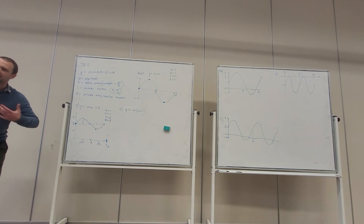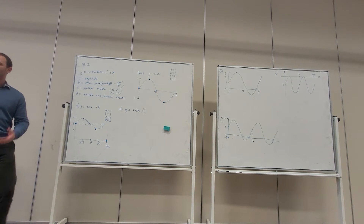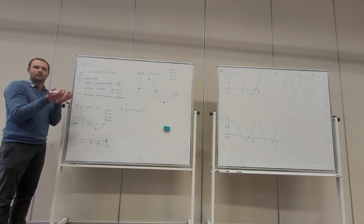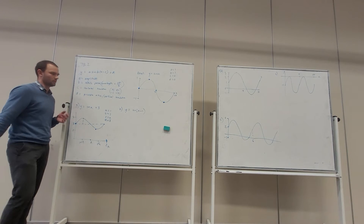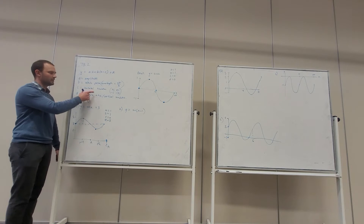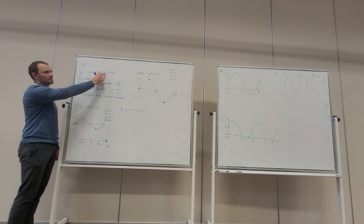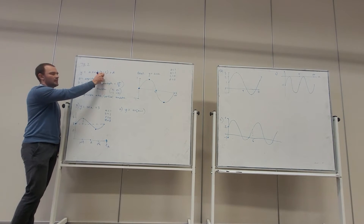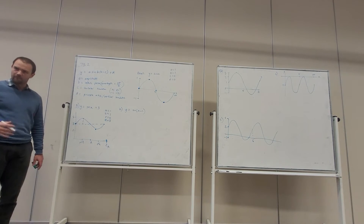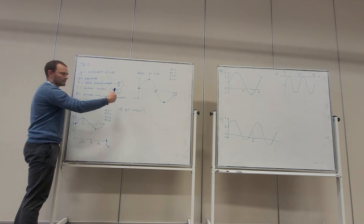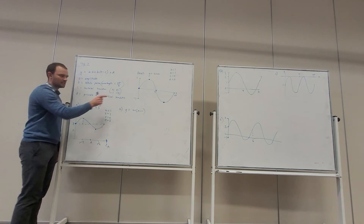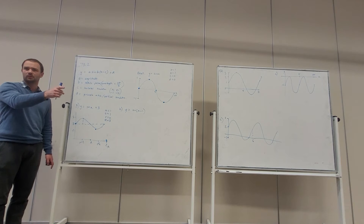So to describe this in words: the whole graph has moved up 3 units — it's vertically translated 3 units. Now, if we have sine of x take 1, that's C in brackets, and C affects the horizontal translation. If we have plus C, it's moving to the left C units; if we have minus C, it's moving to the right C units.